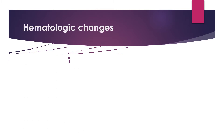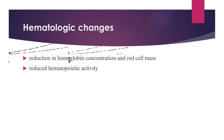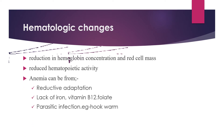Regarding hematologic changes, there is reduction in hemoglobin concentration, red cell mass, and reduced hematopoietic activity. Anemia in severe acute malnutrition occurs due to three reasons. The first is reductive adaptation: because basal metabolic rate decreases by 30 percent, there is decreased oxygen requirement at the tissue level.